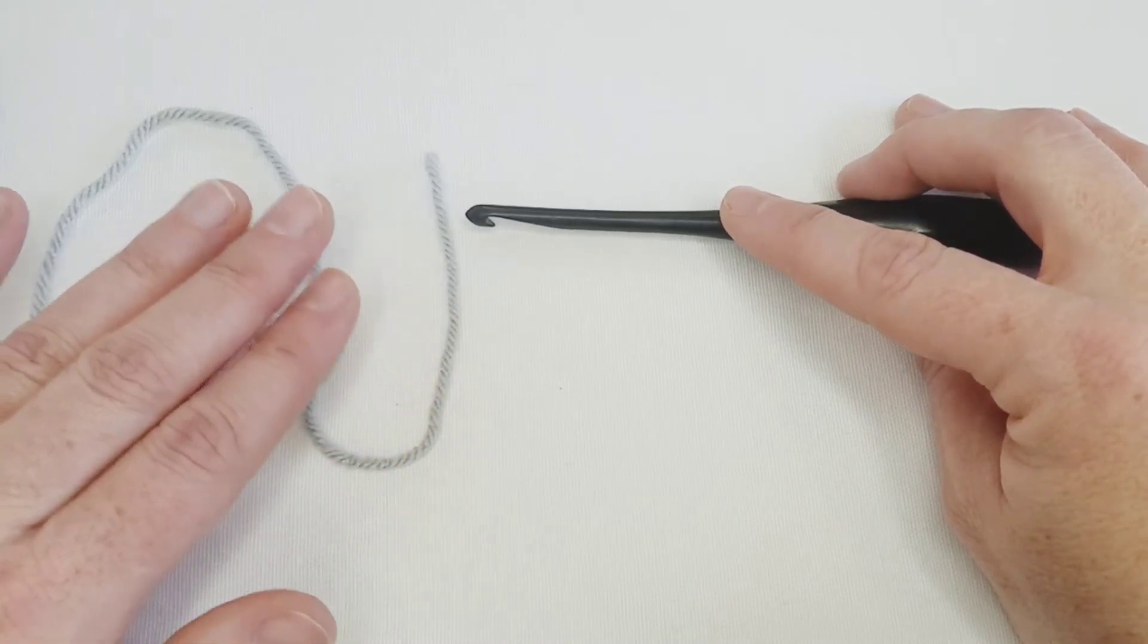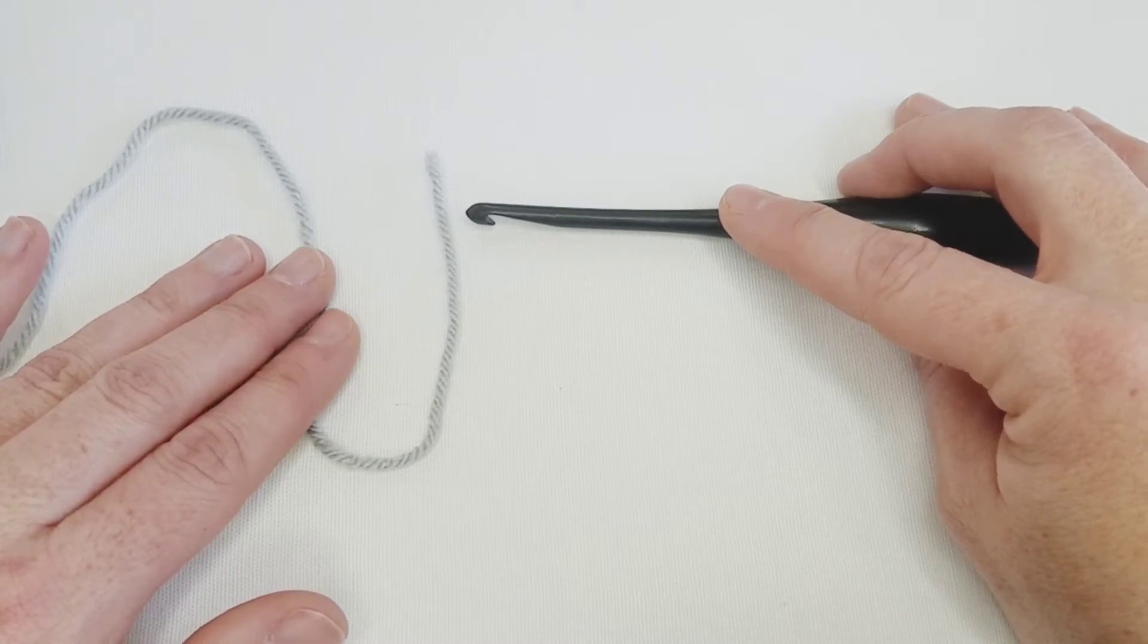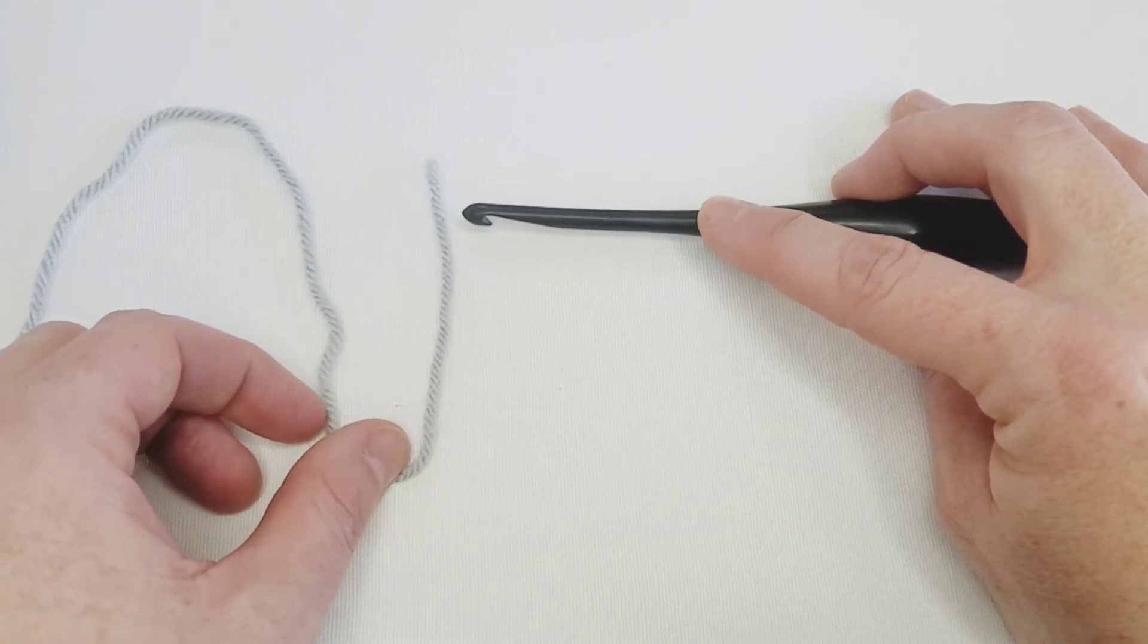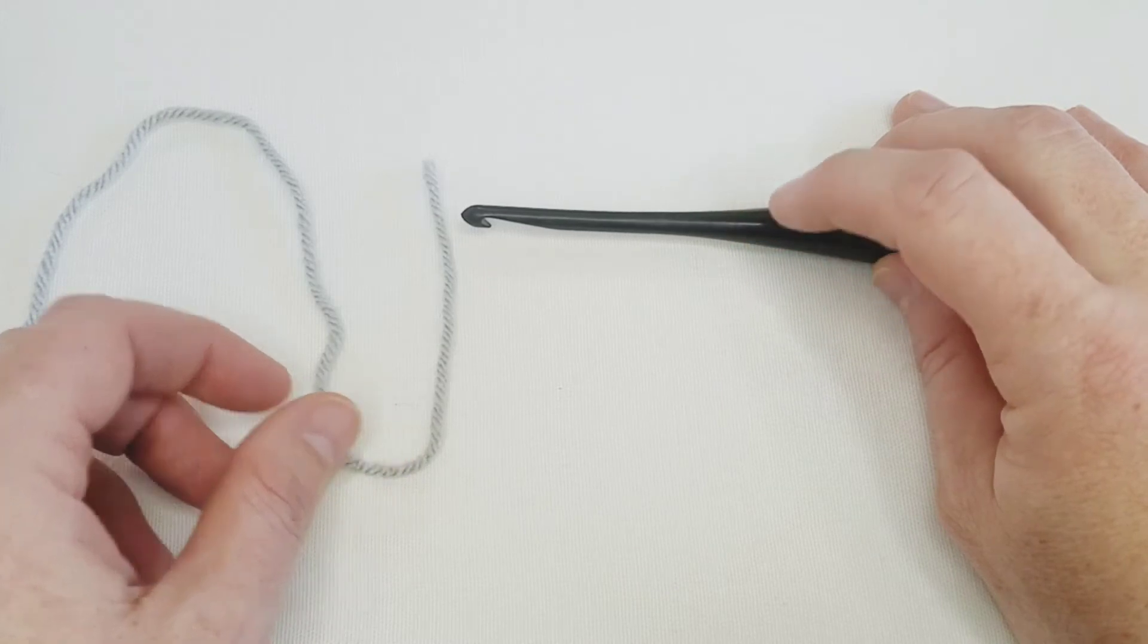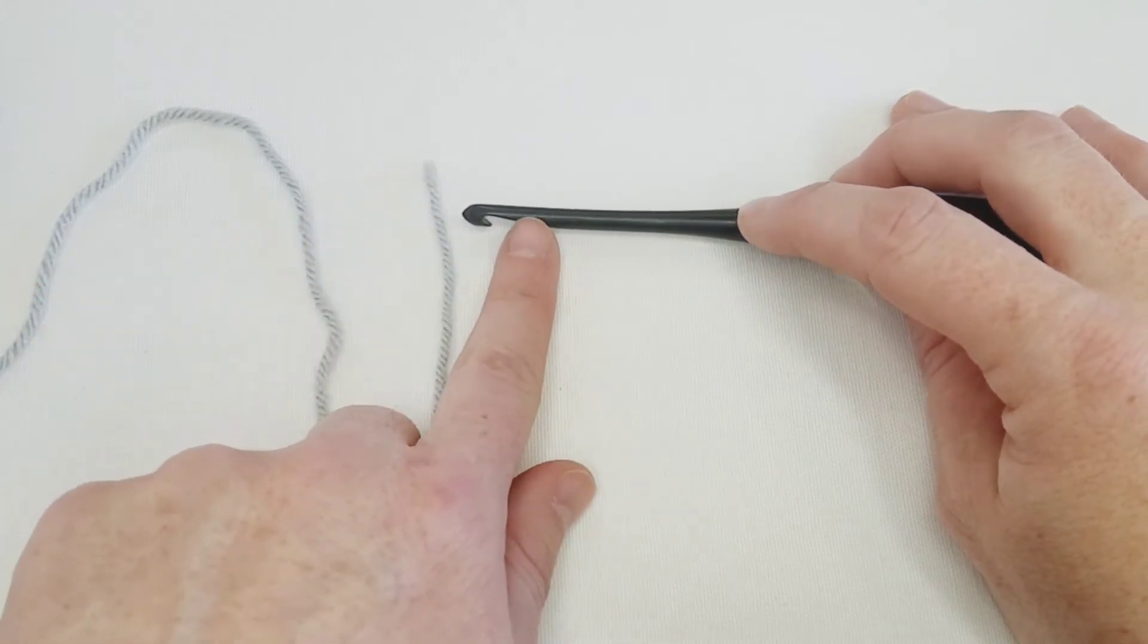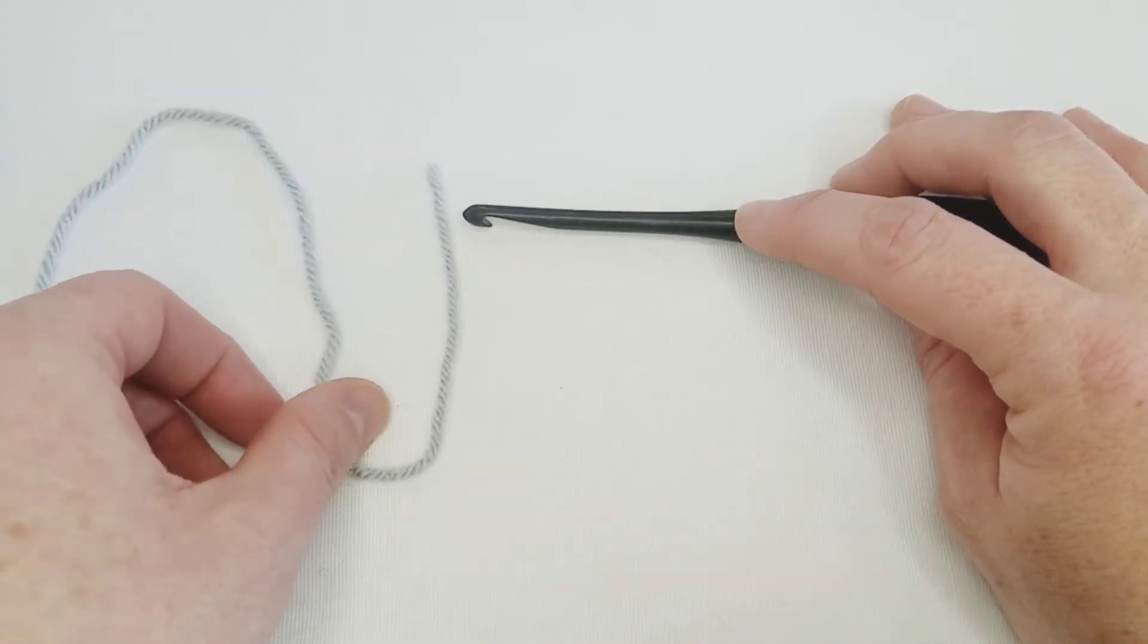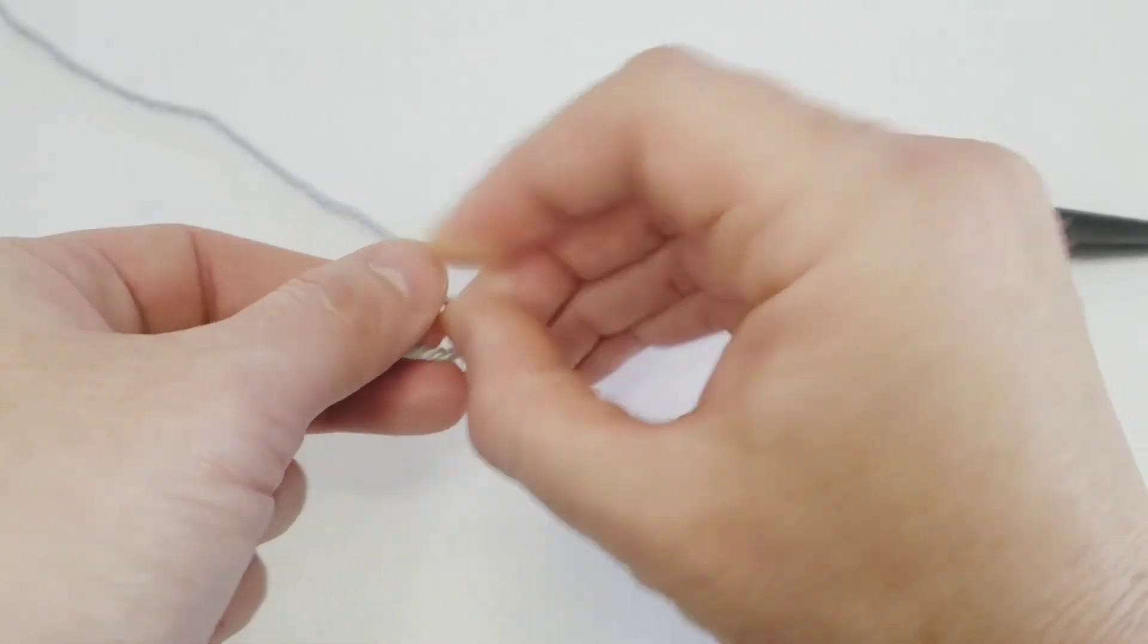But since I'm just showing you the basics here and since we're just going to make a teeny tiny little swatch, this is a great way to play around before investing in any new tools. So all you need is a crochet hook that has some amount of a straight shaft on it just to practice.